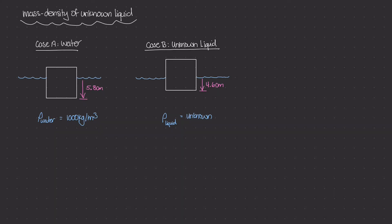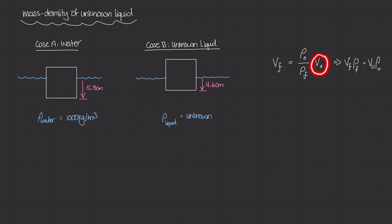If you remember from the last video, we found this relationship between the volume of fluid that gets displaced when an object is floating — not submerged, but floating inside a body of liquid — and that volume of displaced liquid is equal to the mass density of the object divided by the mass density of the fluid times the volume of the object. Another way to write this is: the volume of the fluid that gets displaced times the mass density of the fluid equals the volume of the object times the mass density of the object. We'll need this later. The important thing to remember is that the volume of fluid displaced for a floating object equals the volume of the object times the ratio of the mass density of the object to the mass density of the fluid.